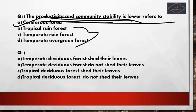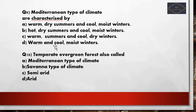Eighth question: which statement is correct? Option A: temperate deciduous forests shed their leaves. Option B: temperate deciduous forests do not shed their leaves. Option C: tropical deciduous forests shed their leaves. Option D: tropical deciduous forests do not shed their leaves. The answer is option A — temperate deciduous forests do shed their leaves, but only in particular seasons, not throughout all seasons.